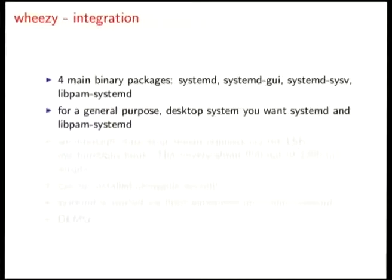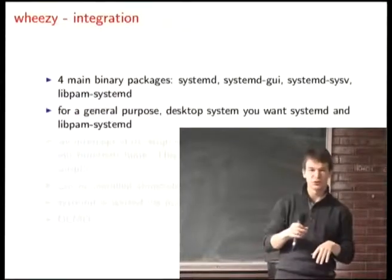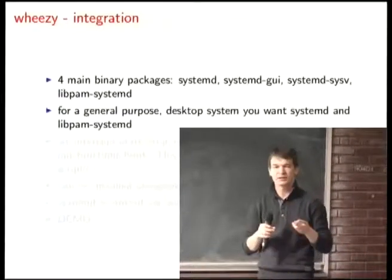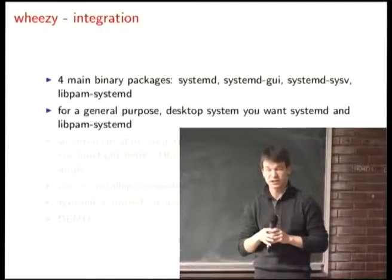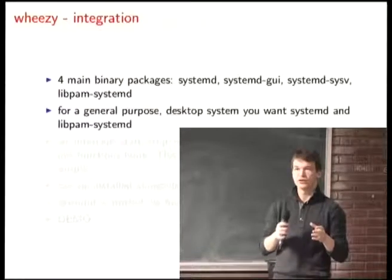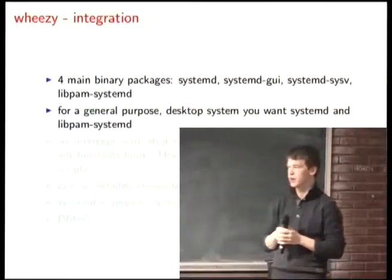When we package systemd, we split it into different packages. There are four main binary packages besides a few library packages: the systemd package itself, a fairly simple UI, systemd-sysv which is nothing more than a bunch of symlinks — for example replacing /sbin/init with a symlink to /bin/systemd. Since that's a file conflict with the sysvinit package, which is an essential package, we moved all those symlinks into a separate package so you can install systemd without triggering conflicts.